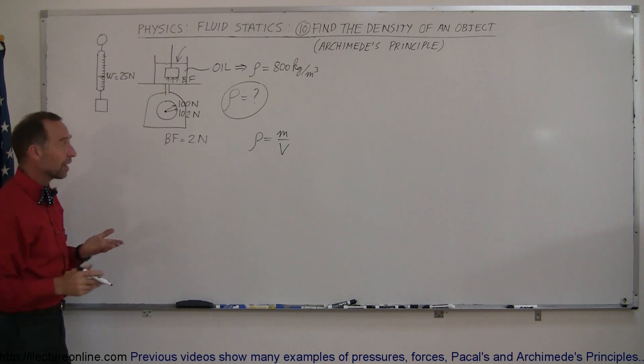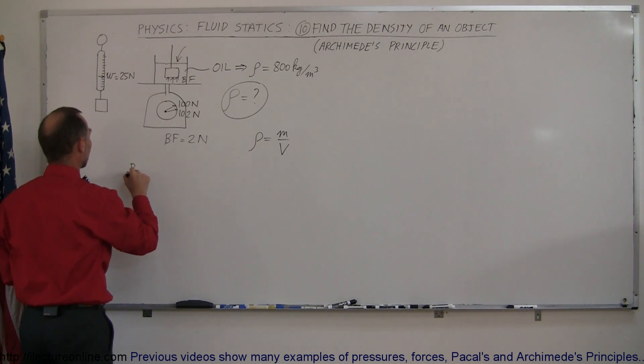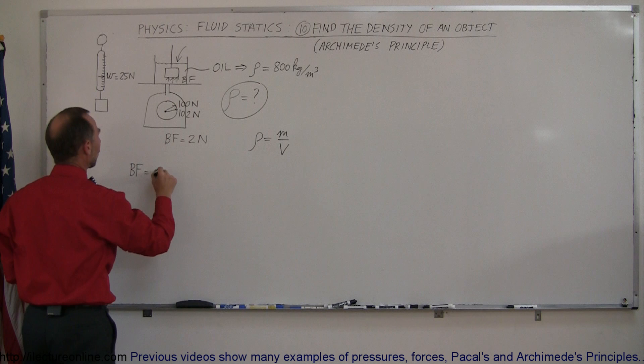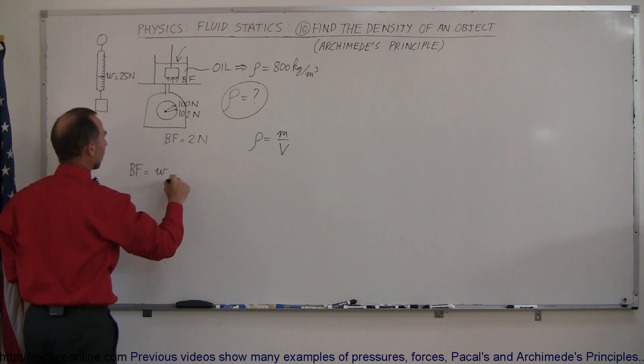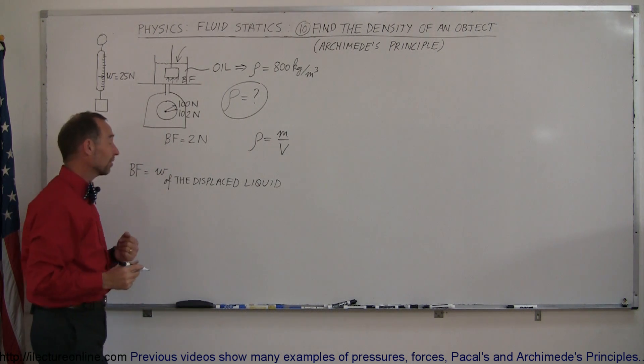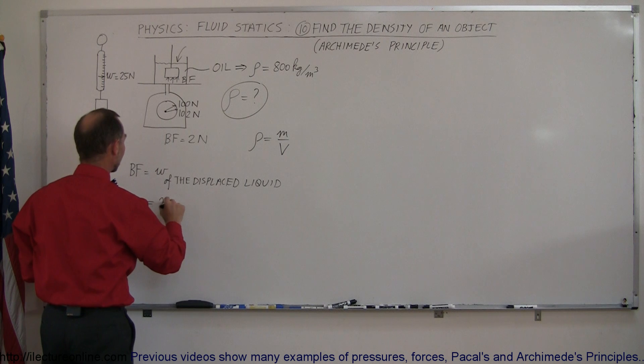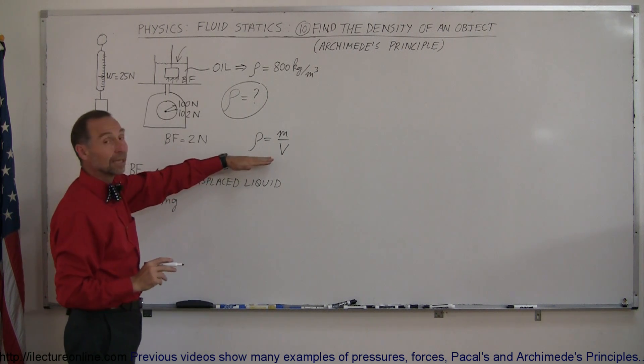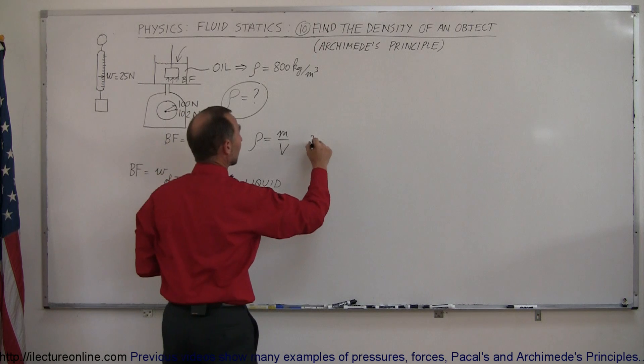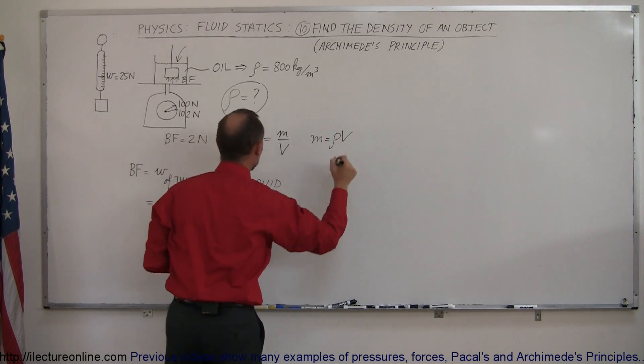And again, the volume can be found by saying that the buoyancy force also is equal to the weight of the displaced liquid. Okay, and so the weight can be written as m times g, so this is the mass times g of the displaced liquid, and of course using the definition of density, we can say that the mass is equal to the density times the volume.